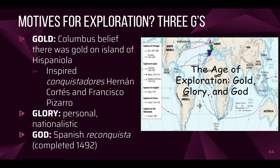Let's look at broader motivations for exploration using the Spanish as an example. The Three G's are a really easy way to remember these motives: Gold, Glory, and God. For gold — in Columbus's first encounter with the Taino people of the island of Hispaniola, which is now the Dominican Republic and Haiti, he saw that some of the Taino people wore gold jewelry. Columbus became convinced there was more gold on this island, and in his first letter back to King Ferdinand and Queen Isabella, he told them there were vast quantities of gold there. It turned out there wasn't much gold, but there was a lot of fertile land and people that Columbus considered exploitable.